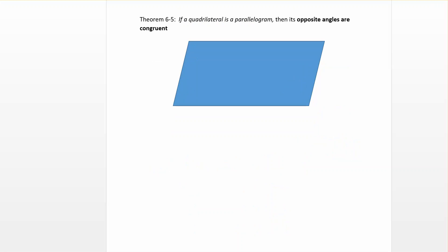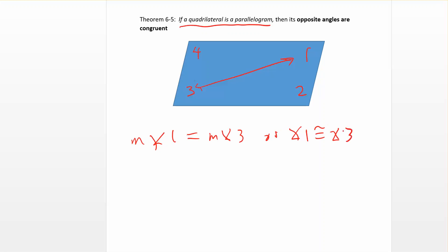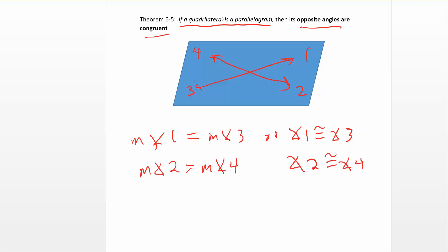Theorem 6-5 says: if a quadrilateral is a parallelogram, then opposite angles are congruent. So if the angles are labeled 1, 2, 3, and 4, the measure of angle 1 equals the measure of angle 3, and angle 2 is congruent to angle 4. That one's pretty straightforward — just remember that opposite angles are congruent when you have a parallelogram.